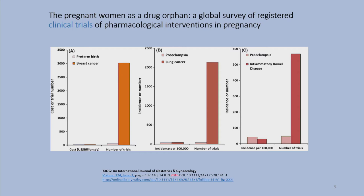A 2016 paper looking at the number of clinical trials compared treatments for preterm birth against breast cancer, preeclampsia against lung cancer, and preeclampsia against inflammatory bowel disease. The incidence of lung cancer and inflammatory bowel disease is actually similar to these obstetric conditions. However, there is a grossly disproportionate number of trials for preterm birth and preeclampsia compared to lung cancer and inflammatory bowel disease, again reflecting vanishingly few new drugs being developed for obstetric indications.